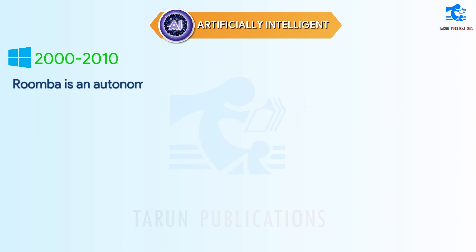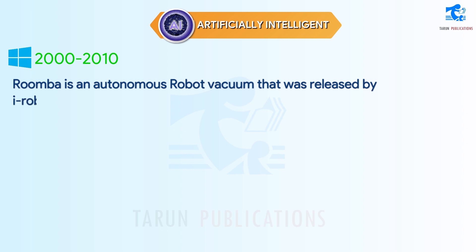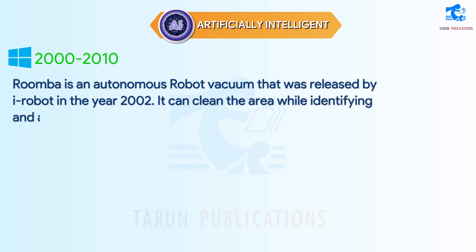Roomba is an autonomous robot vacuum that was released by iRobot in the year 2002. It can clean the area while identifying and avoiding any obstacles.